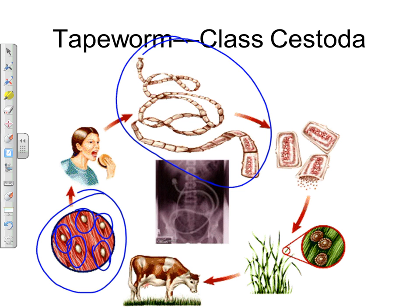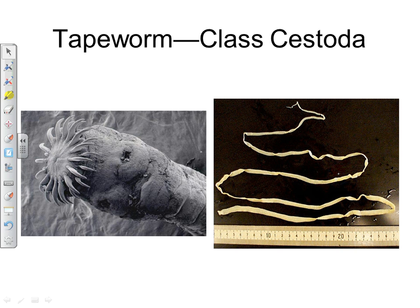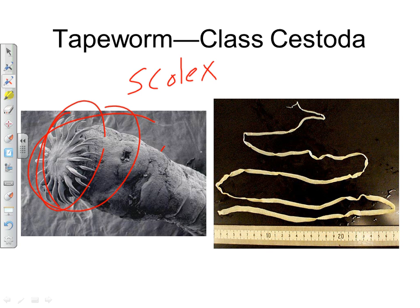An X-ray can show tapeworms inside a person — they can be very long. The head of the tapeworm is called the scolex and has hooks that anchor it to the intestinal walls. The body segments, called proglotids, fill with eggs during reproduction and eventually break off and are passed out of the body.